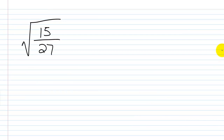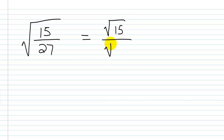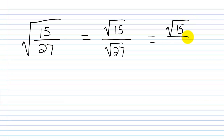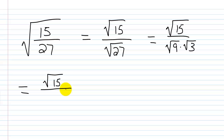Next problem: the square root of 15 over 27. I'll break this up into the square root of 15 over the square root of 27. The square root of 15 — 15 is just 5 times 3, so I'll leave that for now. Square root of 27: 27 is 9 times 3, and 9 is a perfect square, so I can write it as the square root of 9 times the square root of 3. That gives me the square root of 15 over 3 times the square root of 3.